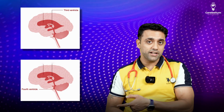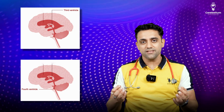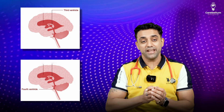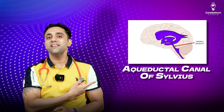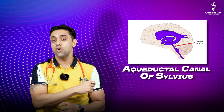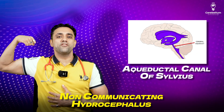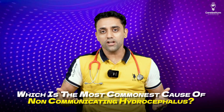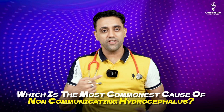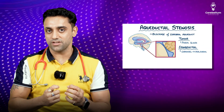And the third ventricle and fourth ventricle are connected by which foramen? The answer, very importantly, is the aqueductal canal of Sylvius, and this is the most common cause of non-communicating Hydrocephalus. Please remember this exam question: the most common cause of non-communicating Hydrocephalus is aqueductal stenosis.